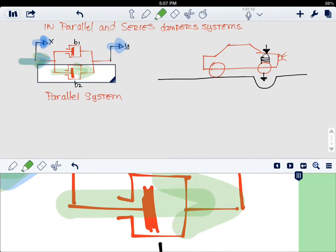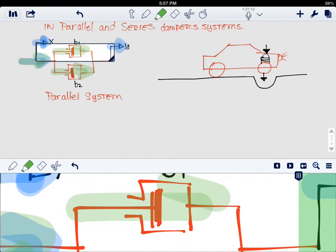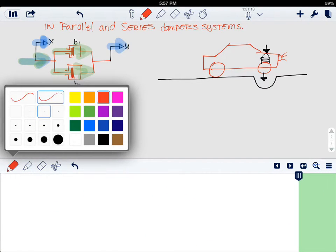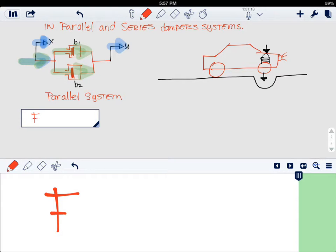Something else that you have to notice is that when you apply this force, the force is going to be distributed between both dampers. This could be algebraically represented in this next equation where the force that is applied will be equal to the coefficient, the friction coefficient of the first damper, times the speed in which this force is applied.